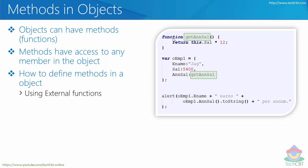For example, here we have an external function called getAnnualSalary. That particular function is assigned to a member of the object called annualSalary. The object OEMP1 has two value-based properties and a third member where a function definition is being assigned, which is automatically converted into a method.